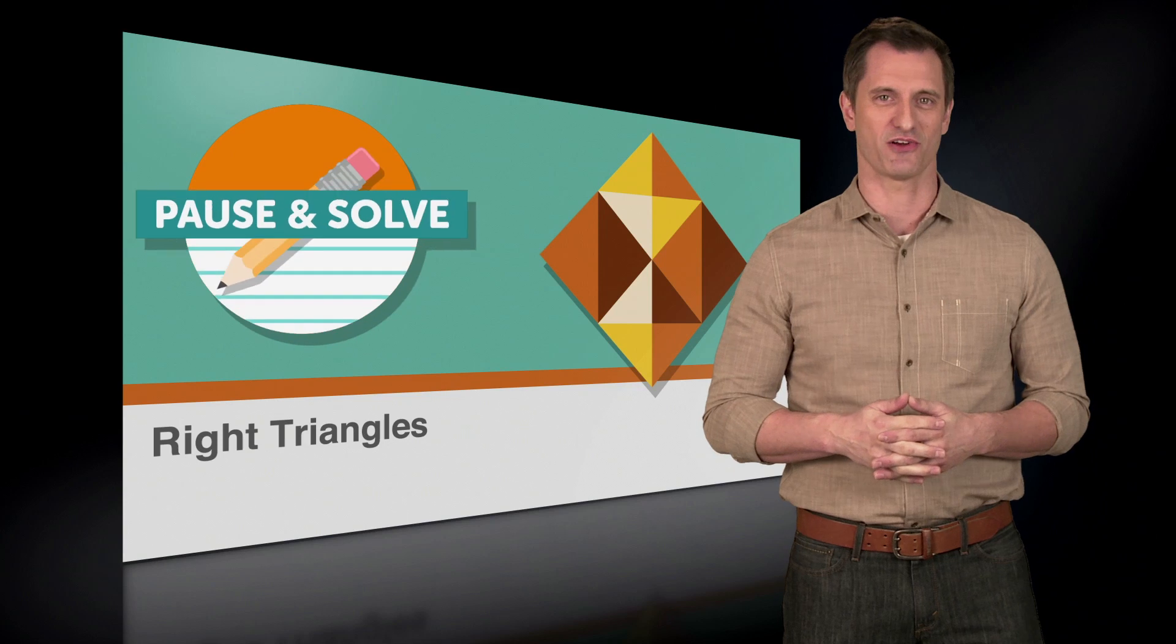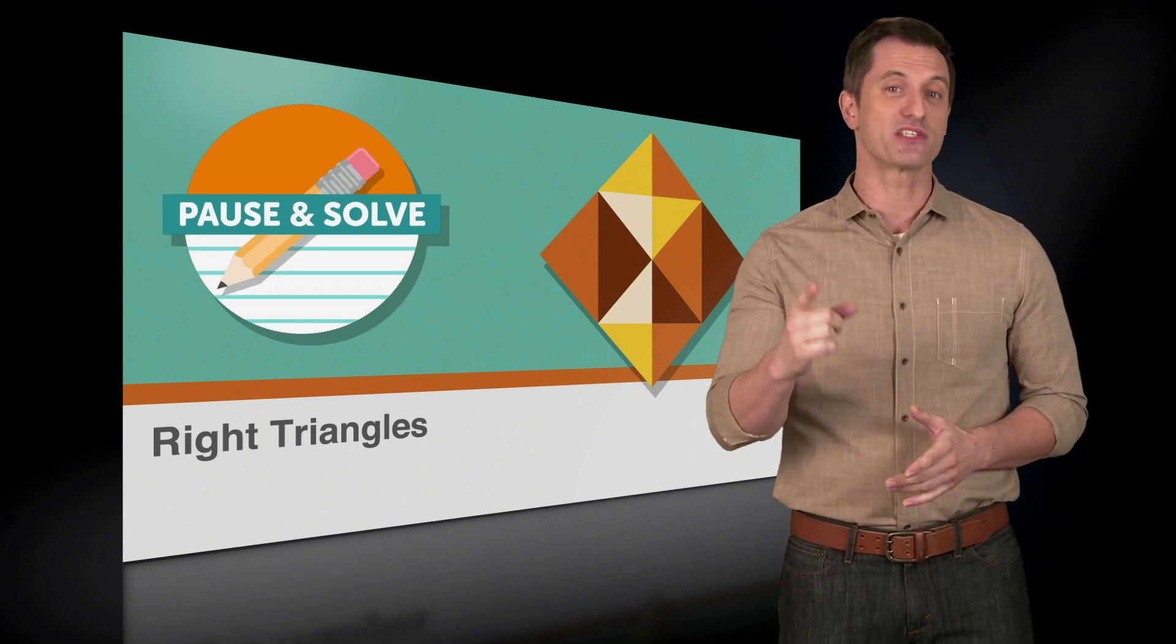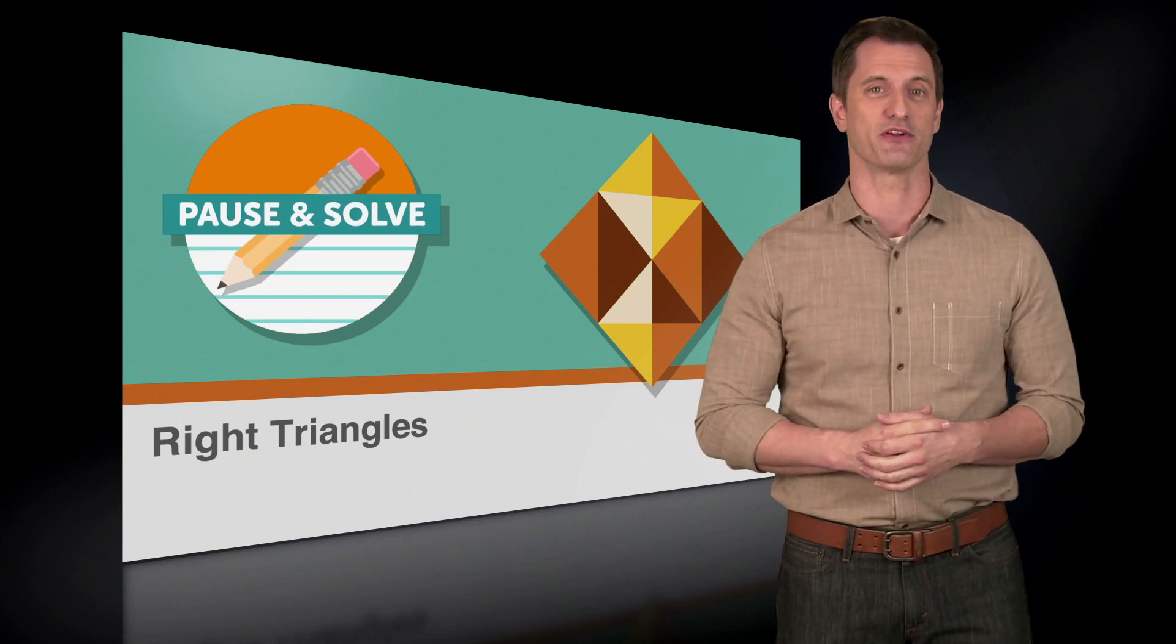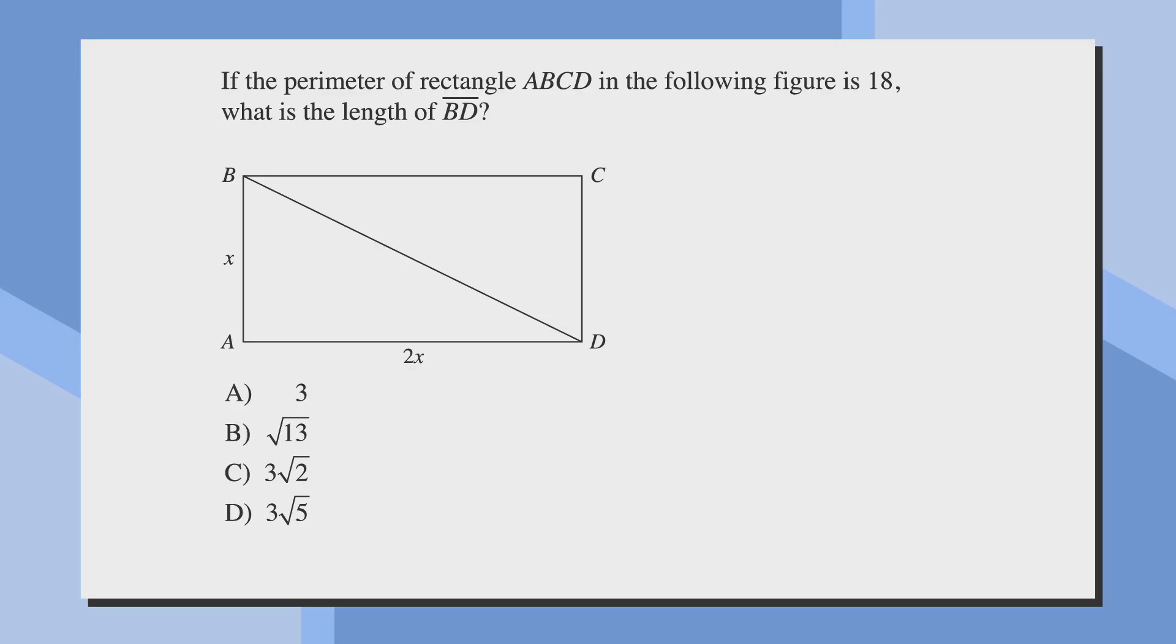We'll take a look at a problem, then you can solve it on your own before we go through it together. Here's the question: If the perimeter of rectangle ABCD in the following figure is 18, what is the length of BD? The answer choices are A) 3, B) √13, C) 3√2, and D) 3√5. Now it's your turn. Ready, set, pause.